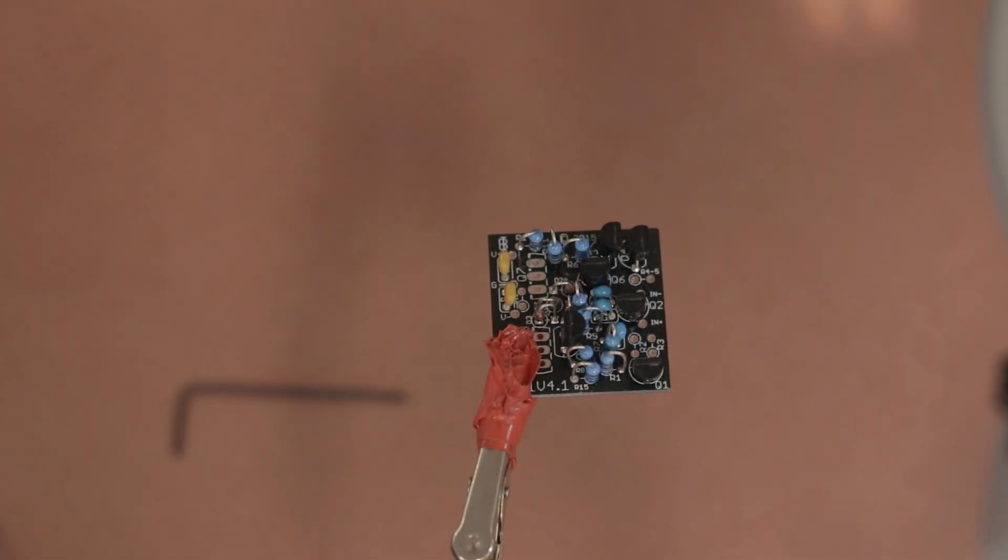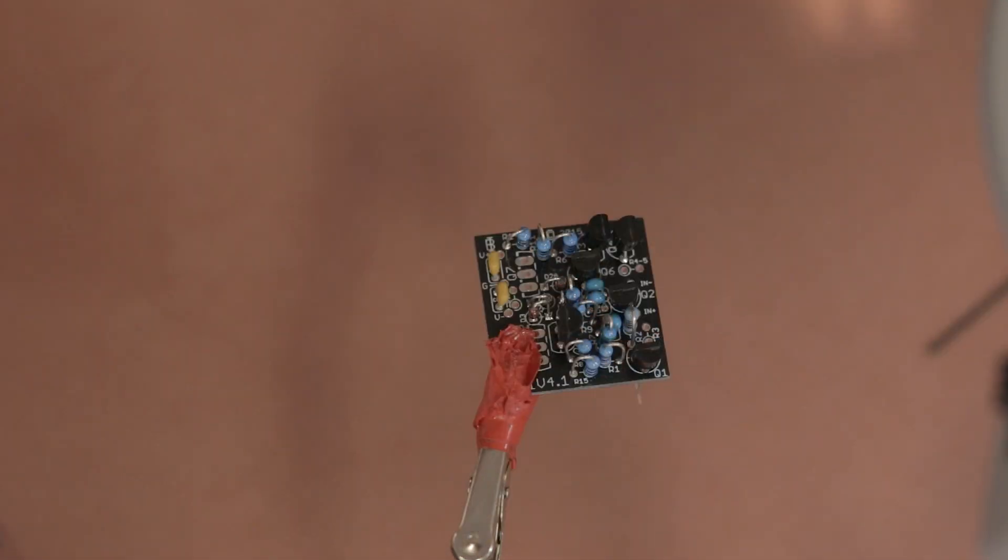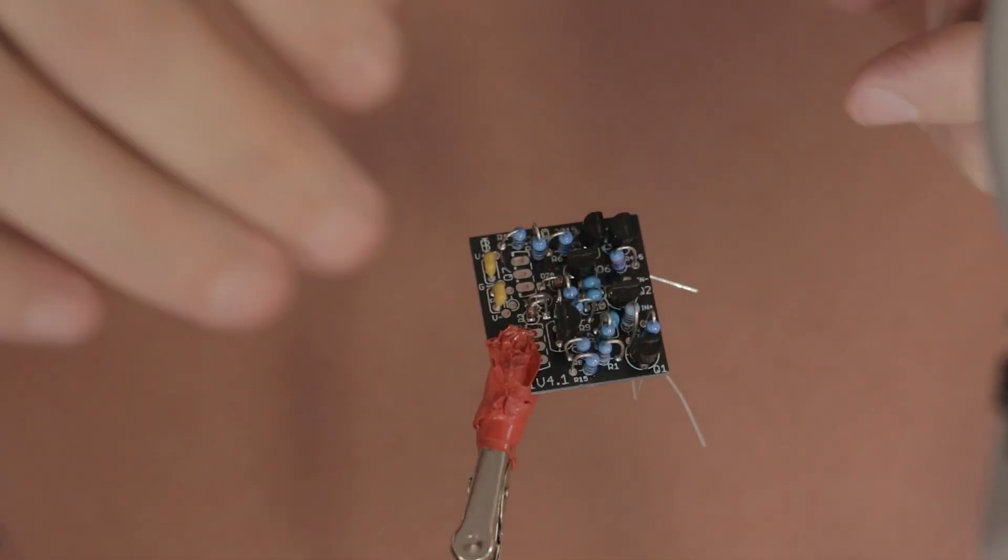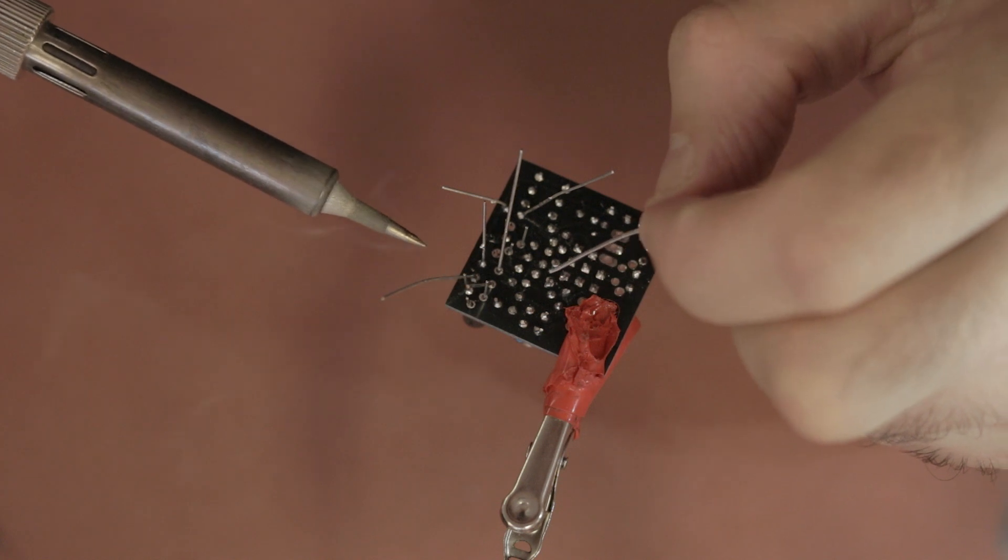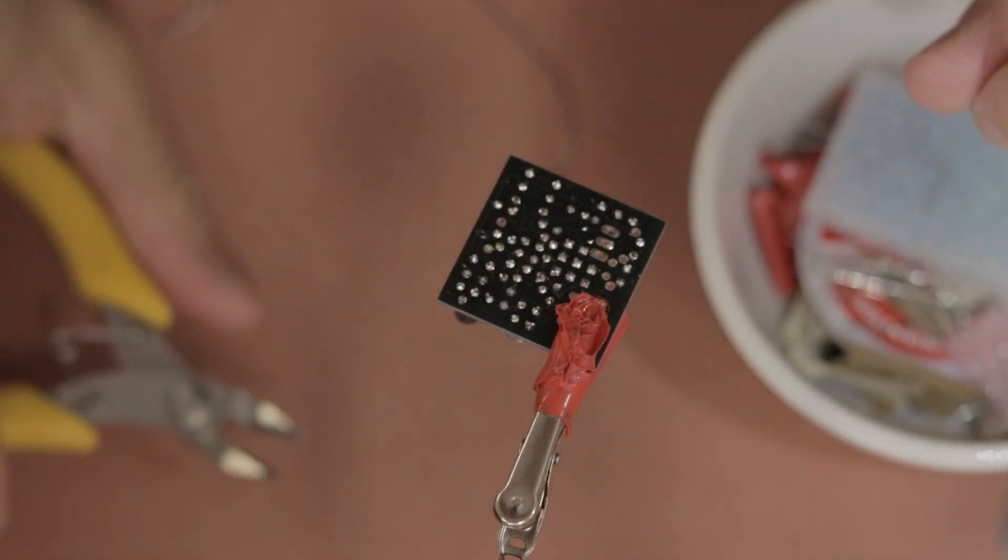And as always, just make sure that they are aligned correctly in the correct orientation, matching the semicircle shape on the PCB. And then also you want to place R2, R3, and R4-5. And then flip the board and solder each of those.